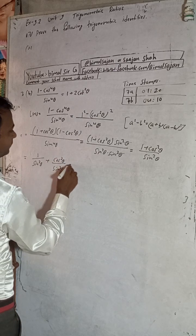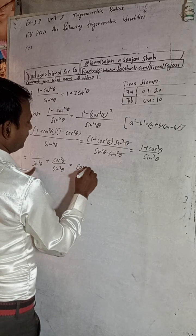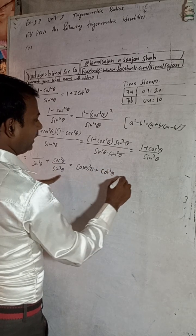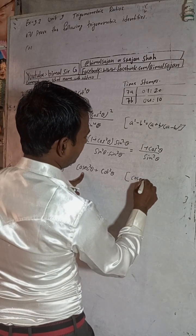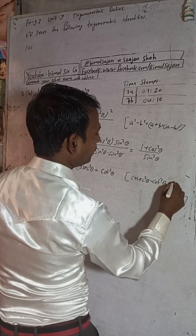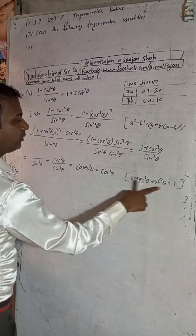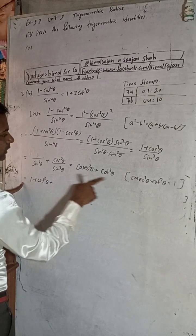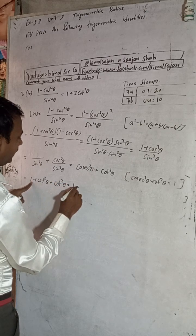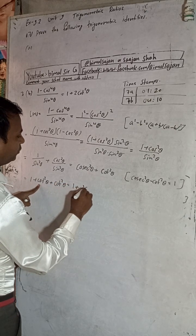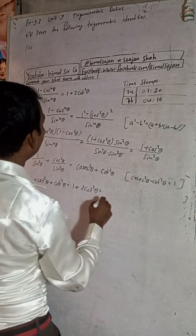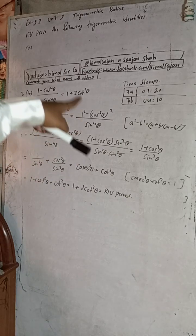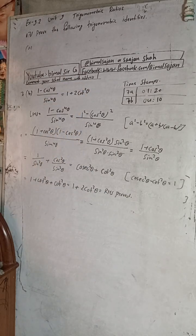This becomes 1/sin²θ plus cos²θ/sin²θ, which is cosec²θ plus cot²θ. Using the formula cosec²θ minus cot²θ equals 1, so cosec²θ equals 1 plus cot²θ. Substituting: (1 plus cot²θ) plus cot²θ equals 1 plus 2 cot²θ, which equals RHS. The time stamp for 7b is 4 minutes 10 seconds.